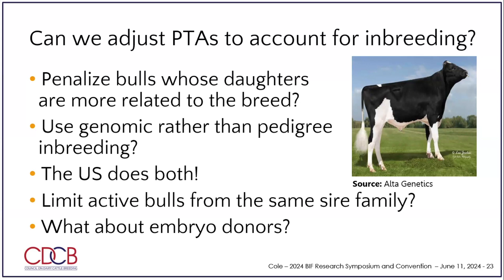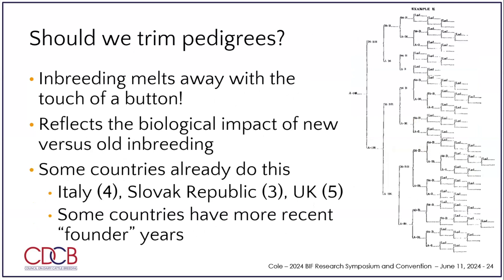Does that limit the number of bulls that all come out of the same family? Not really. It also doesn't do anything about embryo donors. The adjustment is made, but because of the genetic trend under genomics, the adjustments are small and don't cause very much re-ranking. We don't see a bull go from number two to number 500 just for inbreeding — maybe from number two to number four. So we do this, but in practice it hasn't been that helpful.